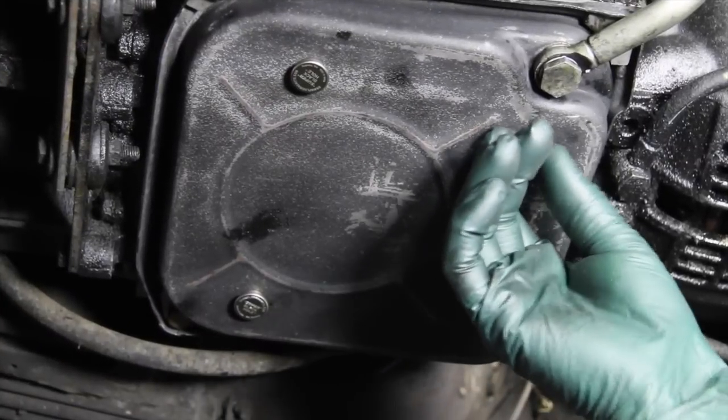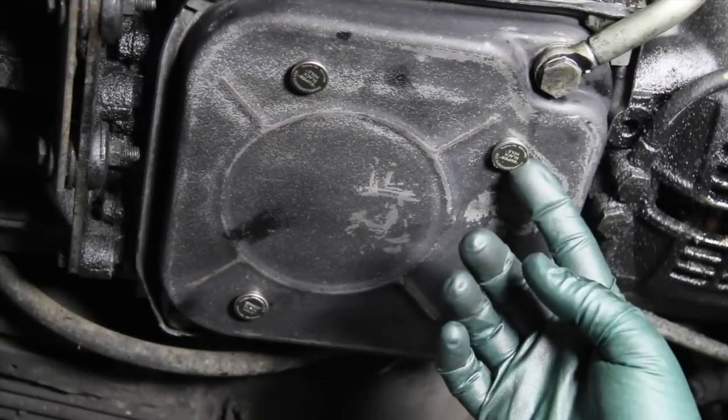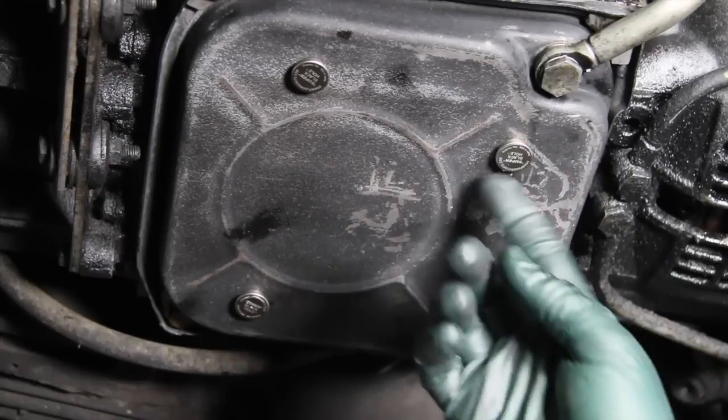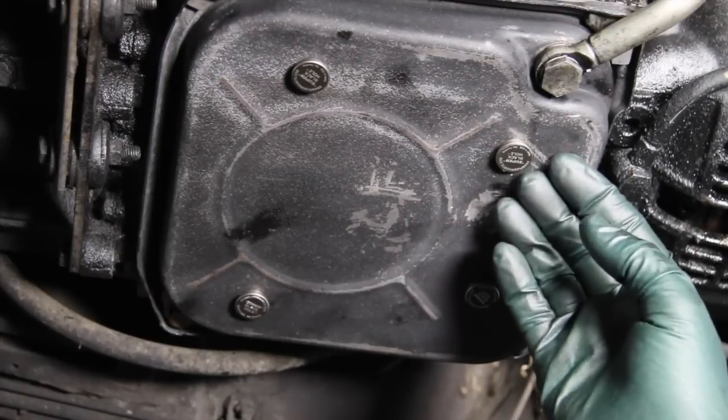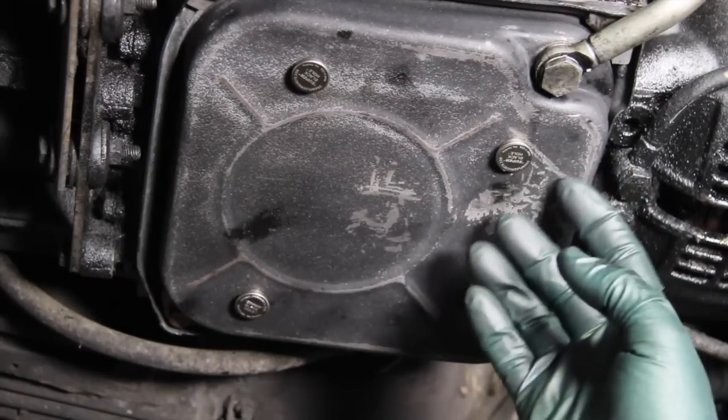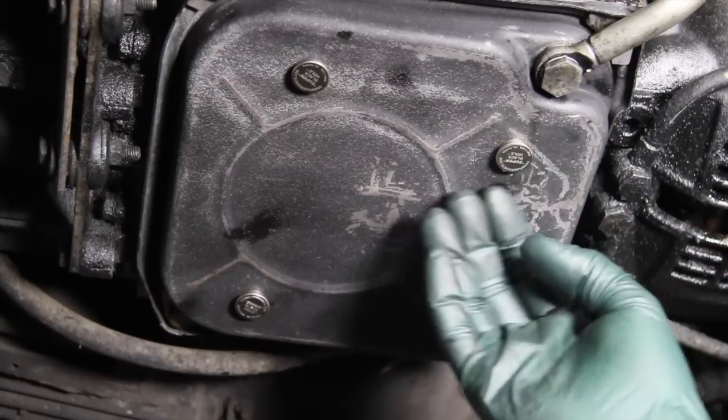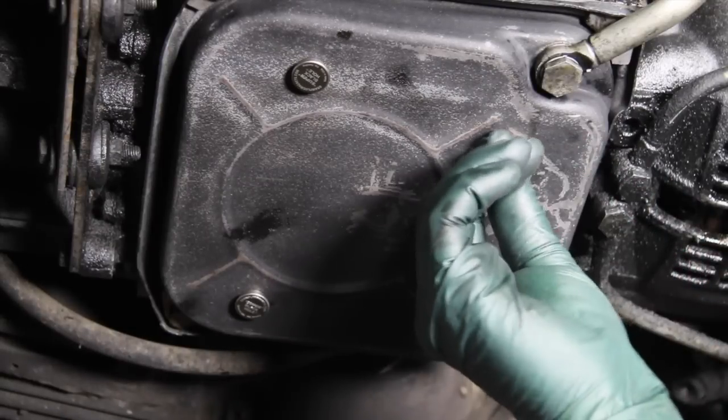You might be thinking, well how are these going to pick up any metal particles when they're on the other side of the pan? Well let me explain. This magnet is so strong that anything on the other side is going to be attracted to it. Any little steel particles in the fluid are going to come right over here and stick right on the pan on the other side of the magnet.